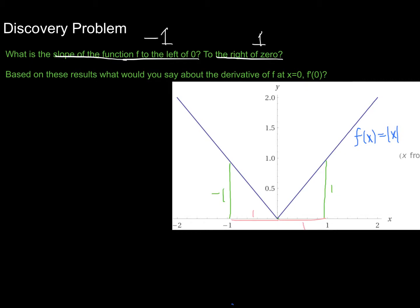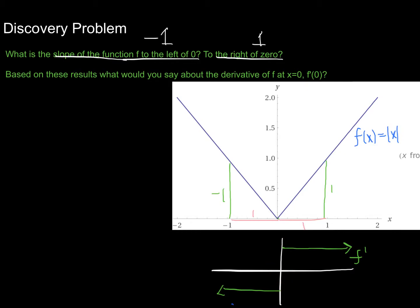If you think about this, one way would be to actually graph the derivative. To the left of 0, the slope is negative 1 everywhere. And everywhere to the right of 0, it's positive 1. So that would be the graph of f prime, and we can see there's some issue. What would I say the slope is right at 0? It seems like right up until the very last second it's negative 1, but right past 0 it's positive 1. There's this jump — this appears to be what looks similar to a jump discontinuity.